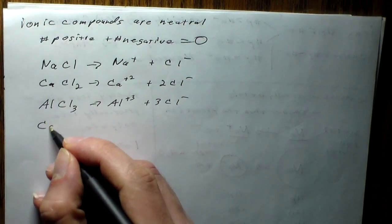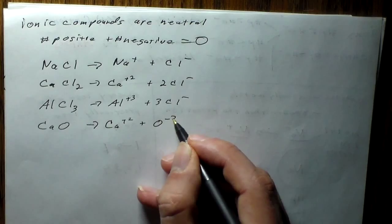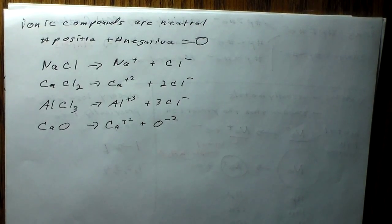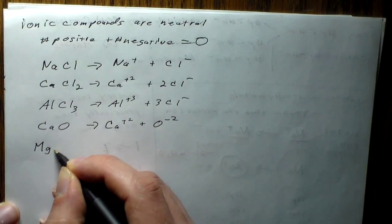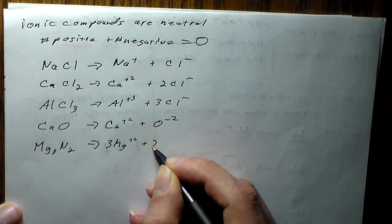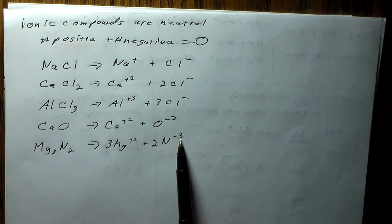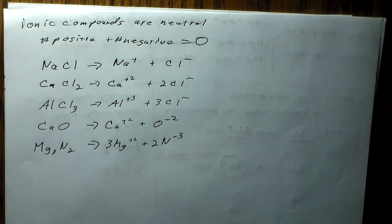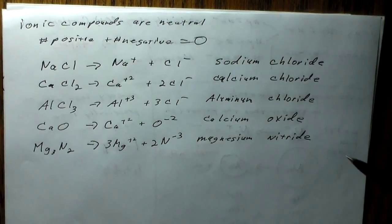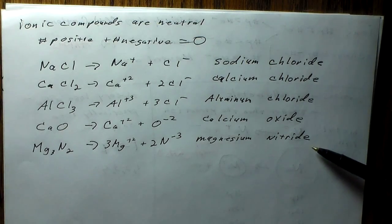Calcium oxide is Ca²⁺ plus O²⁻: plus two and minus two equals zero. A trickier one is Mg₃N₂: three Mg²⁺ plus two N³⁻, which is three times two equals six, plus two times negative three equals minus six — zero. The names for these compounds are sodium chloride, calcium chloride, aluminum chloride, calcium oxide, and magnesium nitride. We'll go through all the naming conventions a little bit later.